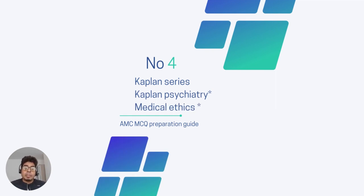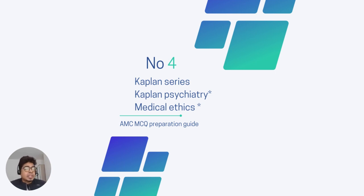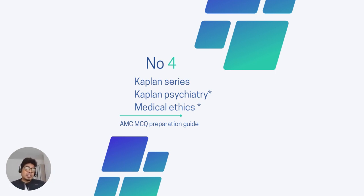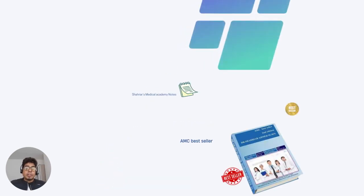Number four is that sometimes you need to use some of the Kaplan series. Among them, Kaplan Psychiatry is one of the key ones. You can also use Kaplan GynaeObs, but our students use our own GynaeObs and Gyne notes since it's not covered well in John Murtagh. Kaplan Psychiatry and the Ethics sections are masterpieces you need to use. If you're not with our academy, Kaplan GynaeObs is a good option to follow.